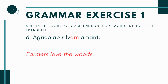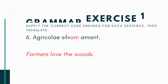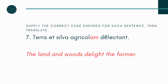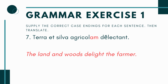On number six, you have agricolae, silva blank, amant. We already have a subject — it's plural: agricolae, nominative plural — and we have a plural verb. So the farmers love something. What do they love? The woods — silvam. You just have the direct object there. That one's pretty straightforward.